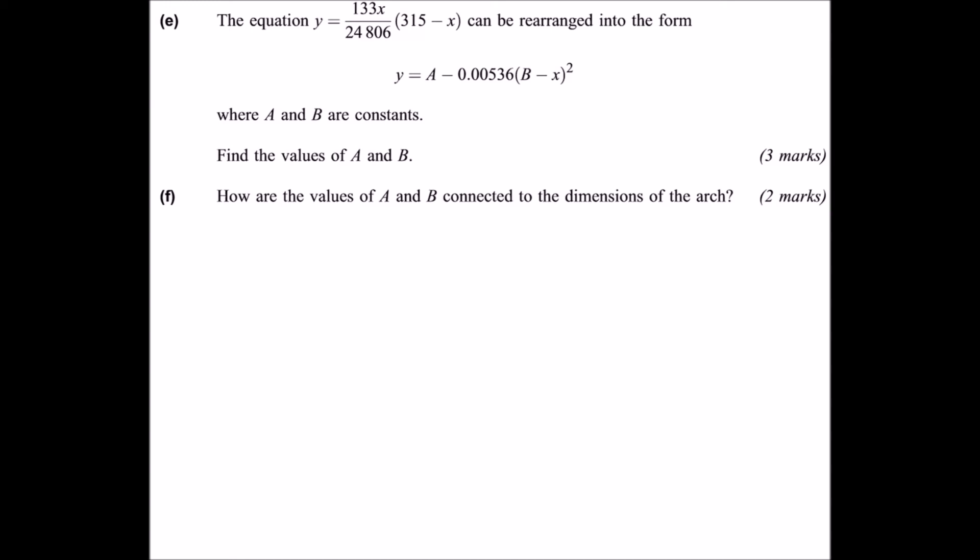Part E says we've got the equation and this asks us to rearrange into form y equals a minus 0.00536 brackets b minus x squared. So hopefully you recognise this has been completed square form. So we're going to start with the original equation y equals 133x over 24,806 times 315 minus x. Now I can't complete the square on it in this form. I've got to expand it out. So what we're going to do is we're going to do the 133x times the 315. When I do that, I'm going to get 1.6889x. When I do that, I'm going to get 1.6889x minus 133 over 24,806 x squared.